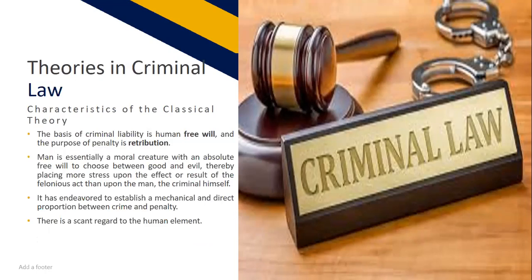There are two important theories in criminal law: the classical theory and the positivist theory. The characteristic of the classical theory is that the basis of criminal liability is human free will and the purpose of penalty is retribution. According to the classical theory, man is essentially a moral creature with absolute free will to choose between good and evil, placing more stress upon the effect or result of the felonious act. It aims to establish a mechanical and direct proportion between crime and penalty, with little regard to the human element. Classical theory is focused on the crime, not the offender.